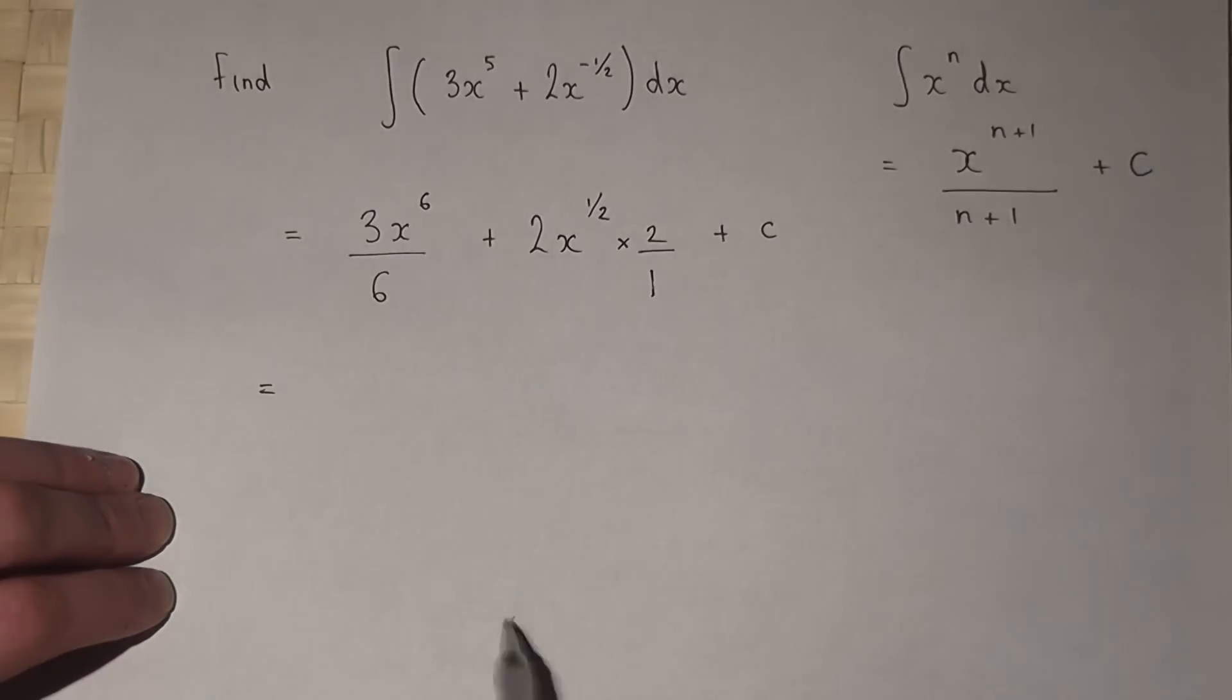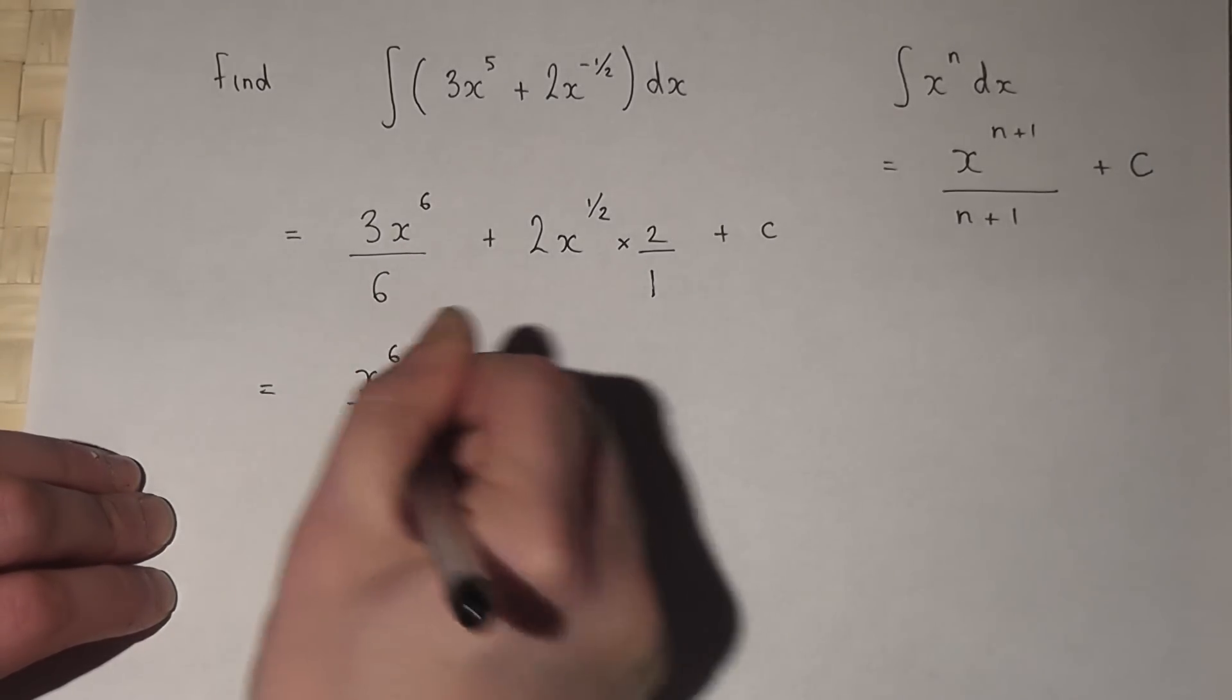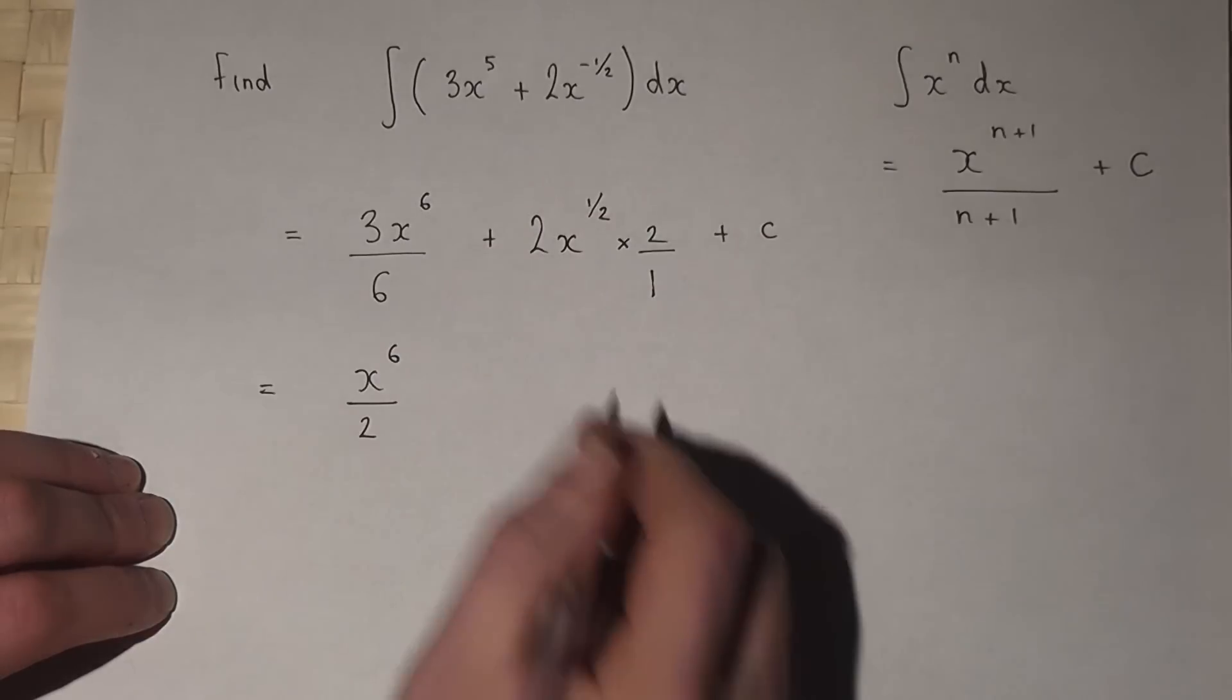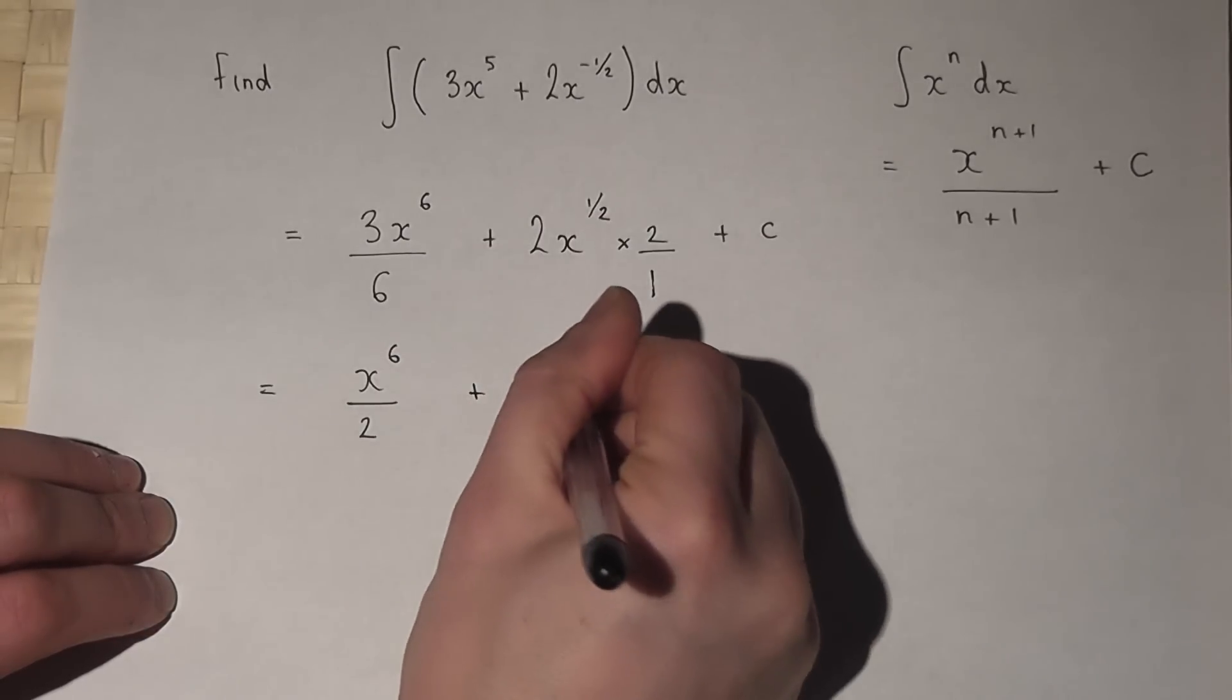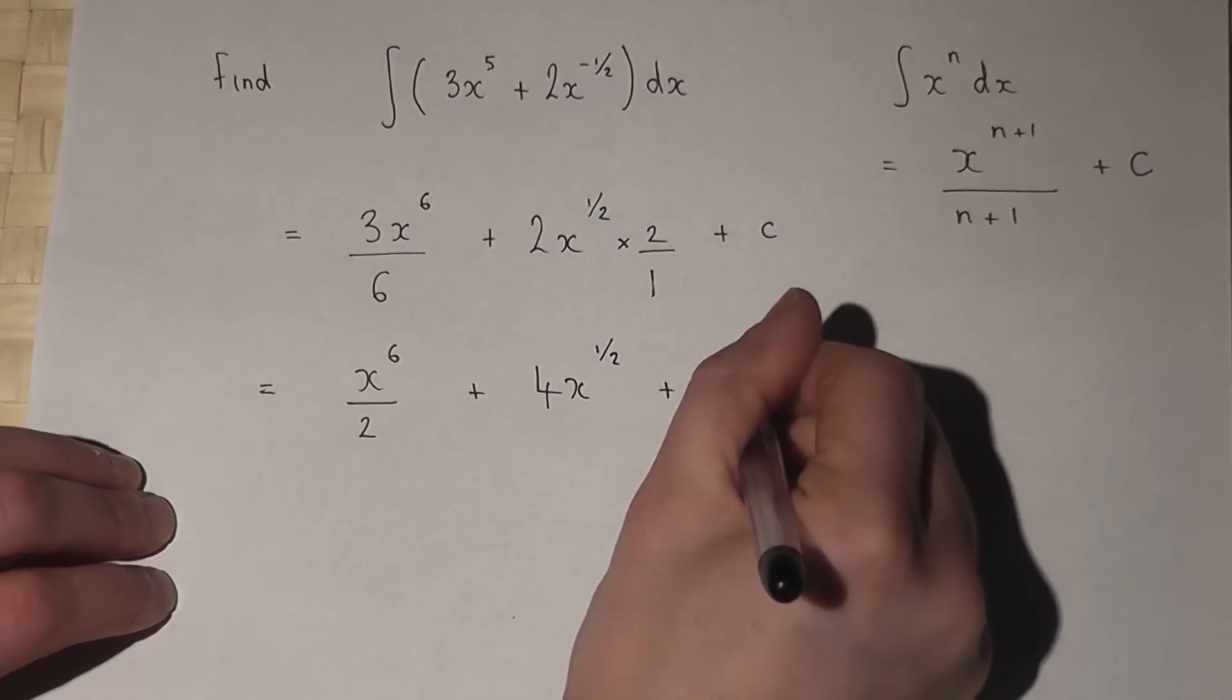Now then, 3 over 6 is a half. So it's x to the power of 6 over a half. 2 times 2 is 4. So 4x to the power of a half and finally plus c.